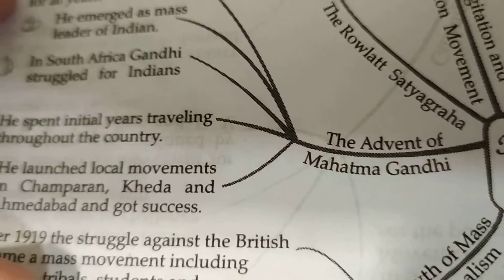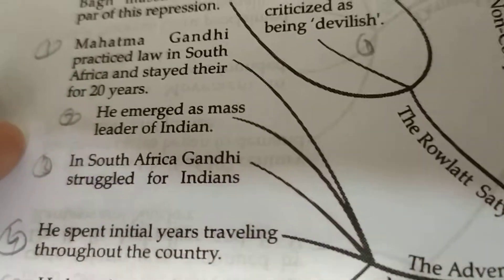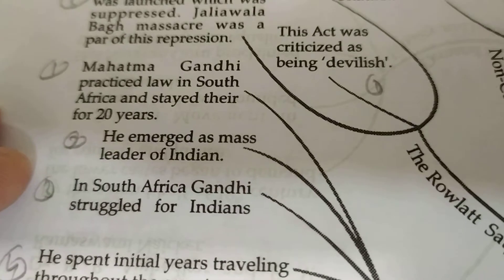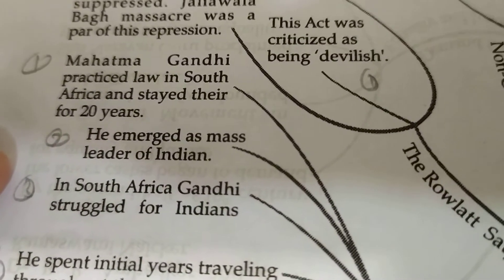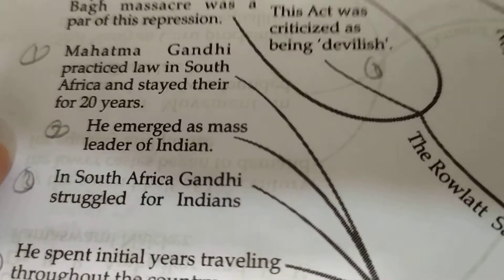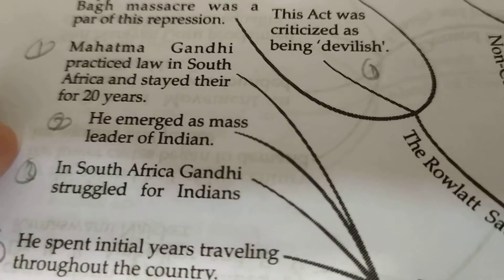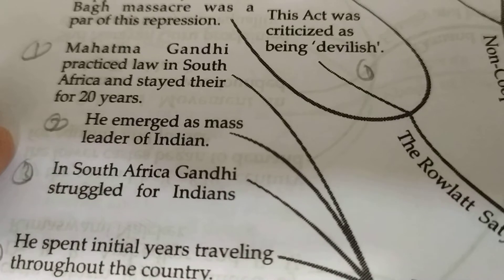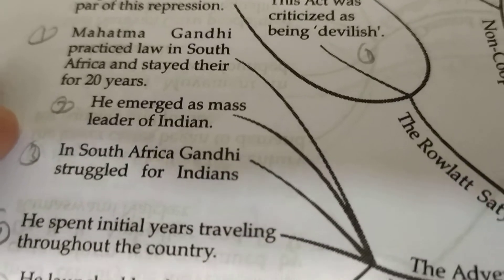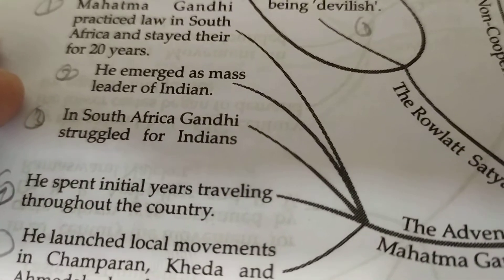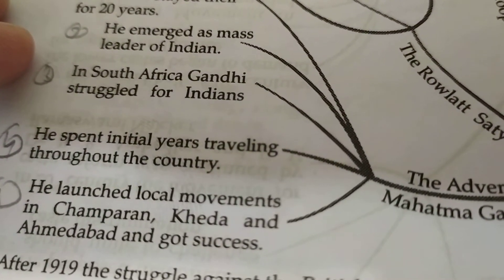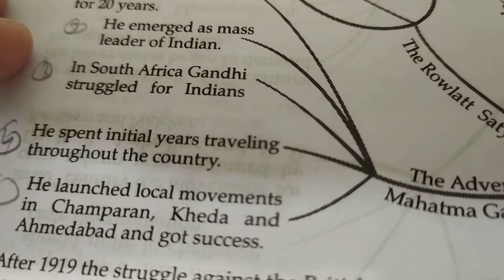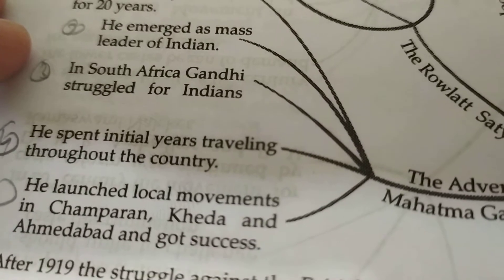Then, the advent of Mahatma Gandhi. Mahatma Gandhi practiced law in South Africa and stayed there for 20 years, where he mastered mass movements. After returning, Gandhi spent initial years traveling throughout the country. He launched local movements in Champaran, Kheda, and Ahmedabad, and got success.